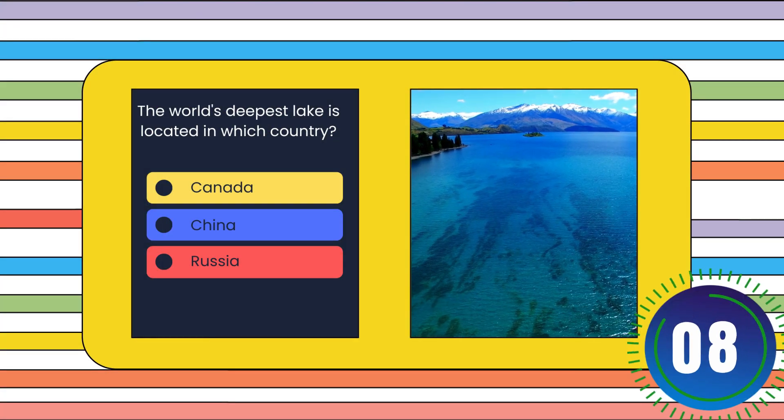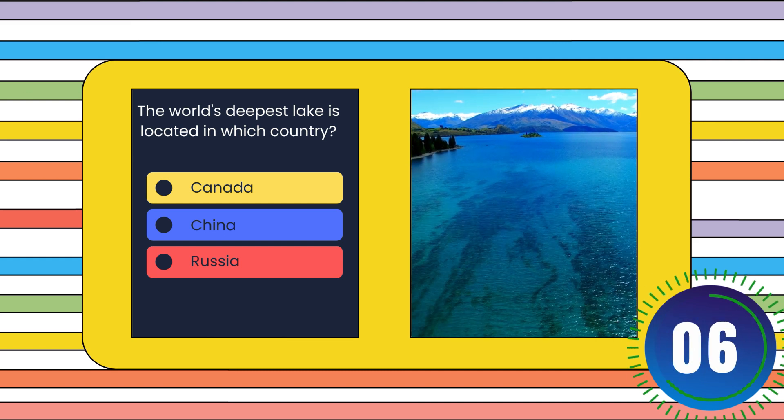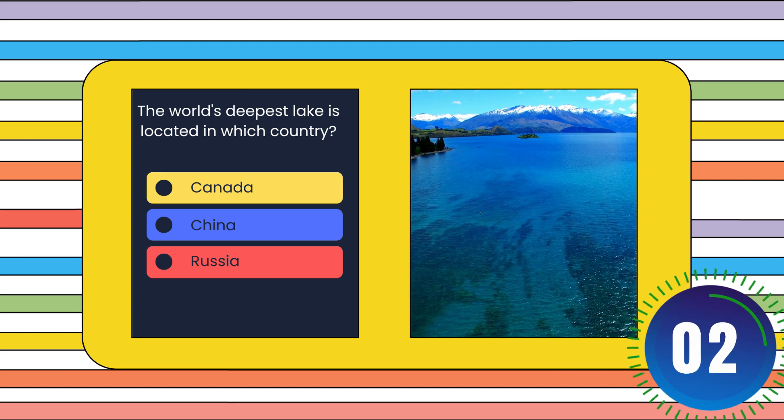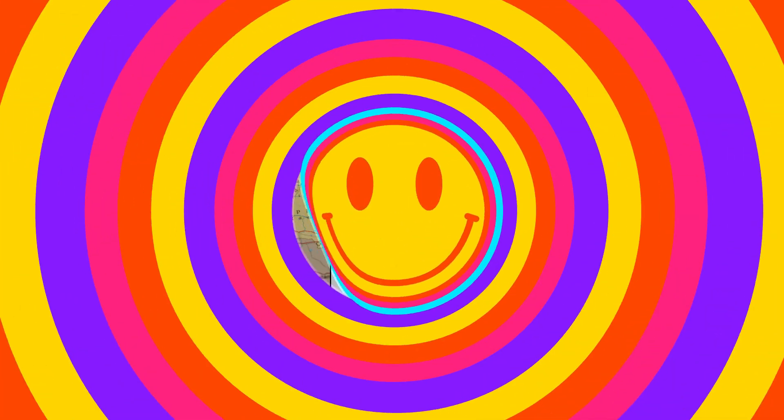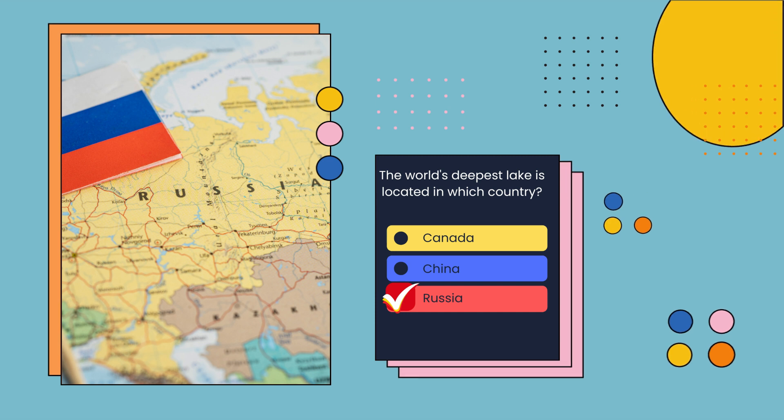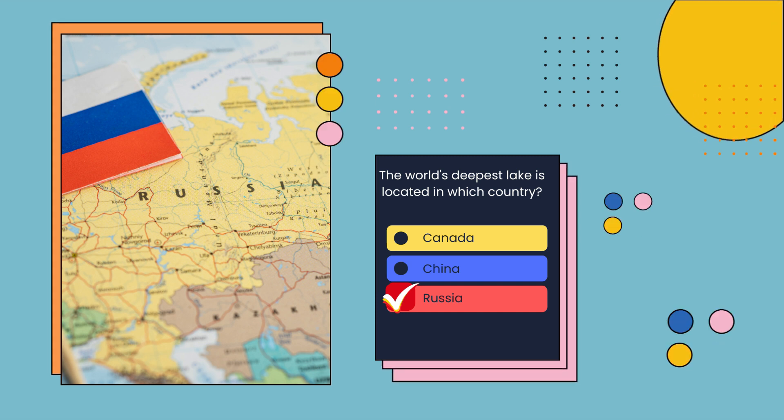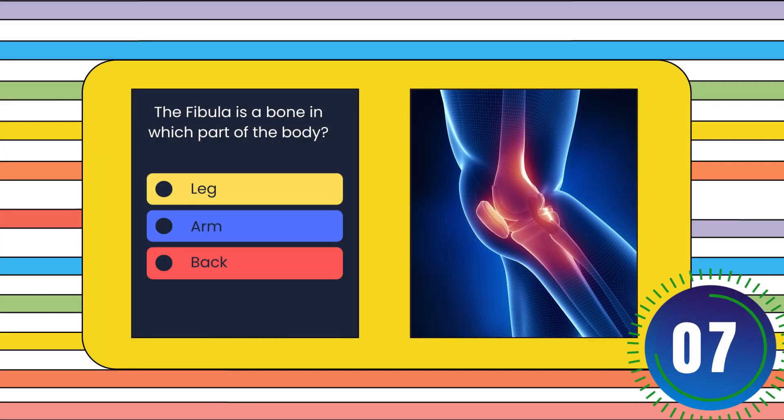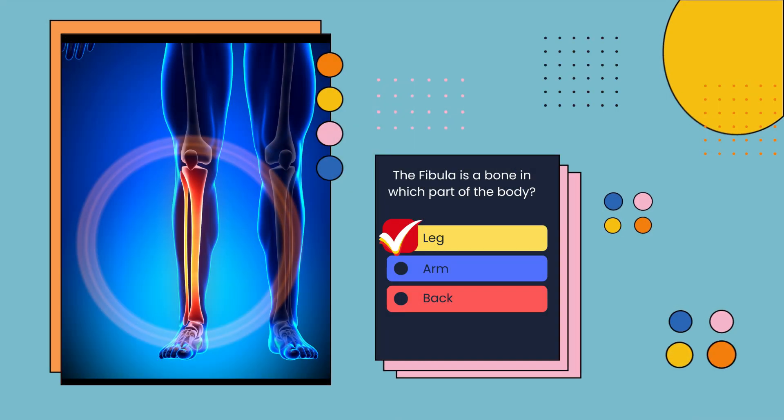The world's deepest lake is located in which country? Canada, China, or Russia? Russia. The fibula is a bone in which part of the body? Leg, arm, or back? Leg.